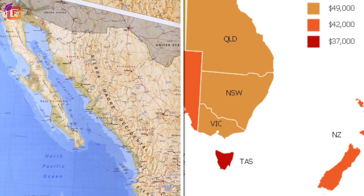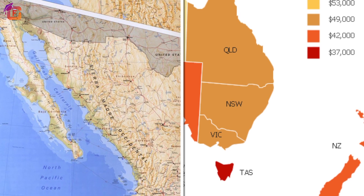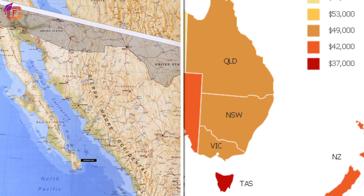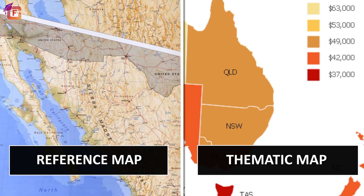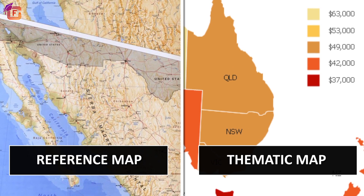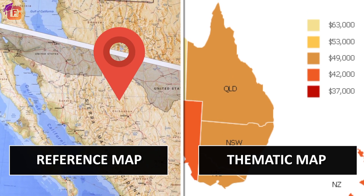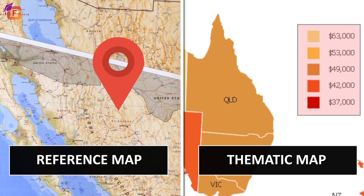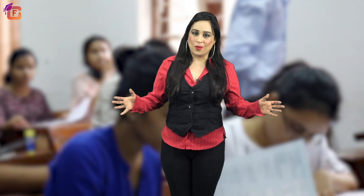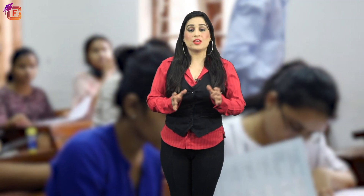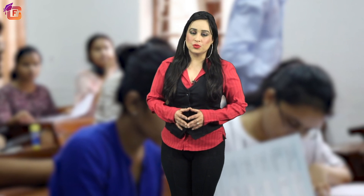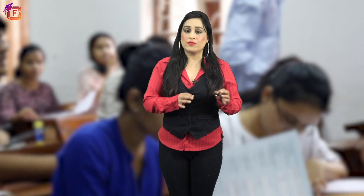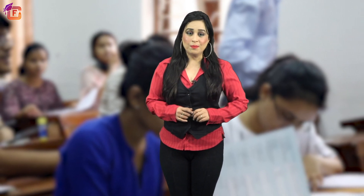A reference map might show bank locations while a thematic map shows average income in an area. The difference between a reference map and a thematic map is the difference between mapping places and mapping data. Can you think of what mistake students might make when distinguishing between a reference map and a thematic map?